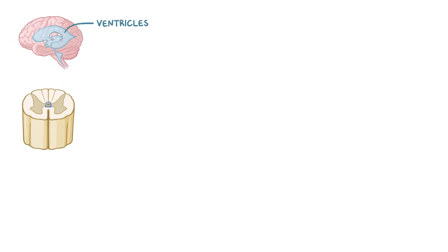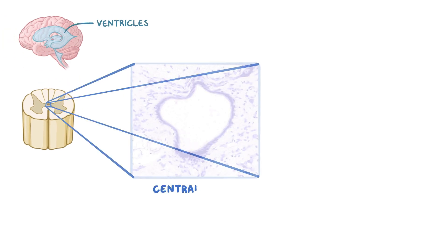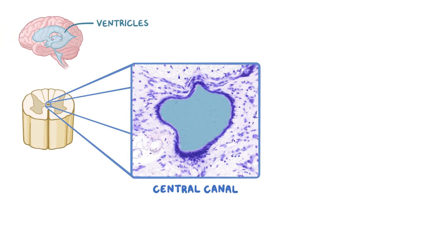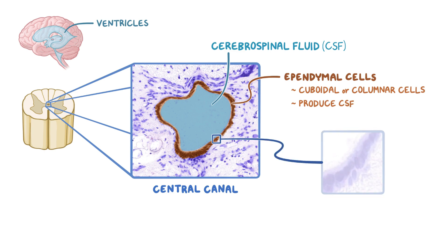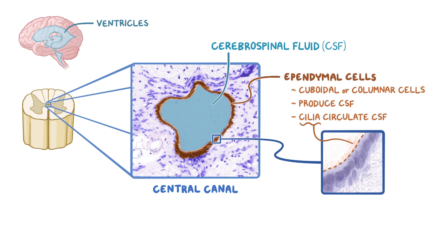The ventricles of the brain and the central canal of the spinal cord are filled with cerebrospinal fluid, or CSF, and have a lining of cuboidal or columnar cells called ependymal cells. These cells are responsible for producing CSF. Taking a closer look, we can also faintly see that the ependymal cells can have cilia, which help circulate the CSF within the central canal.